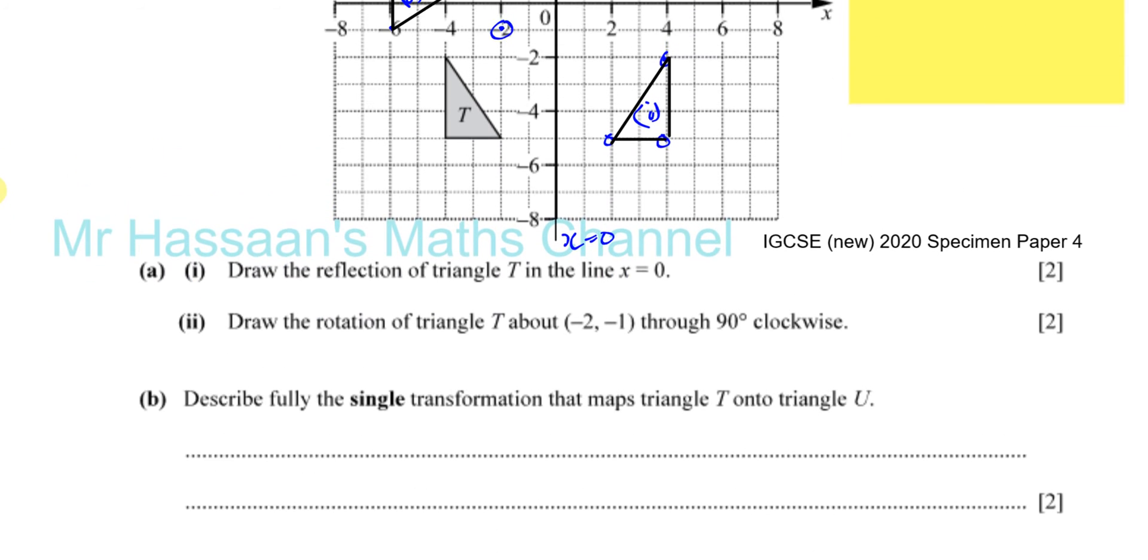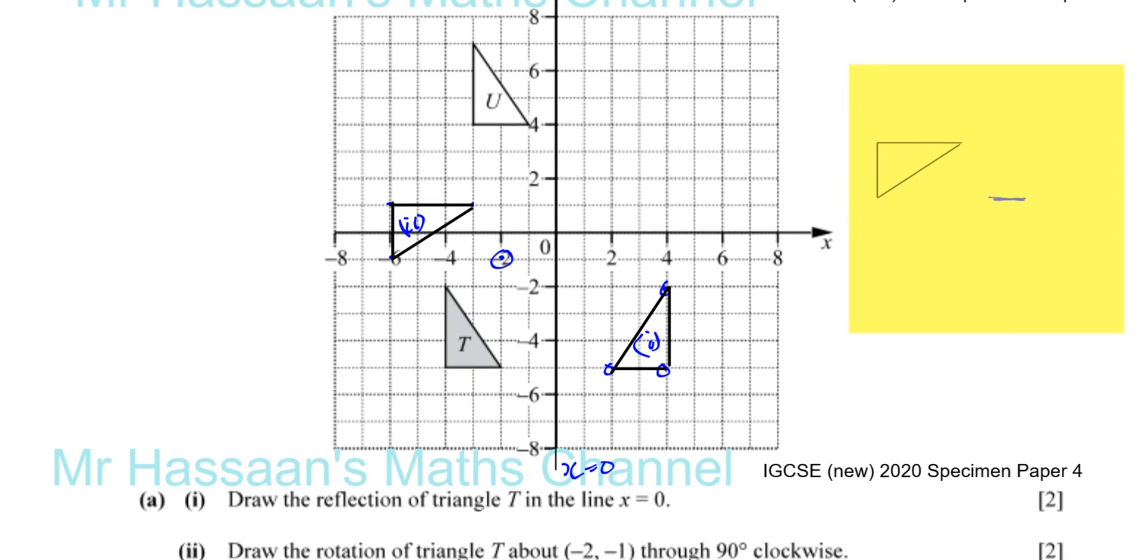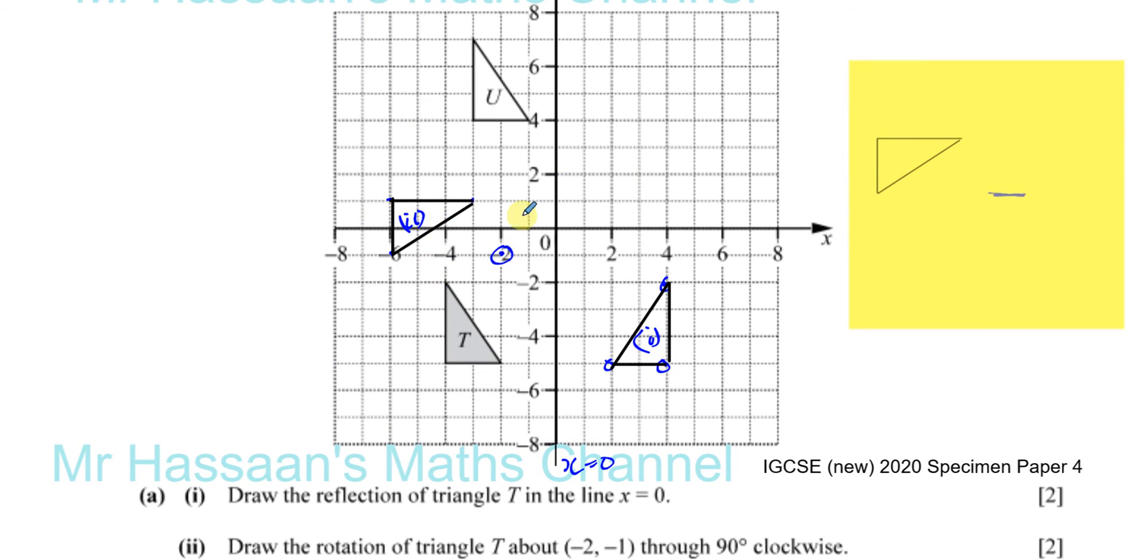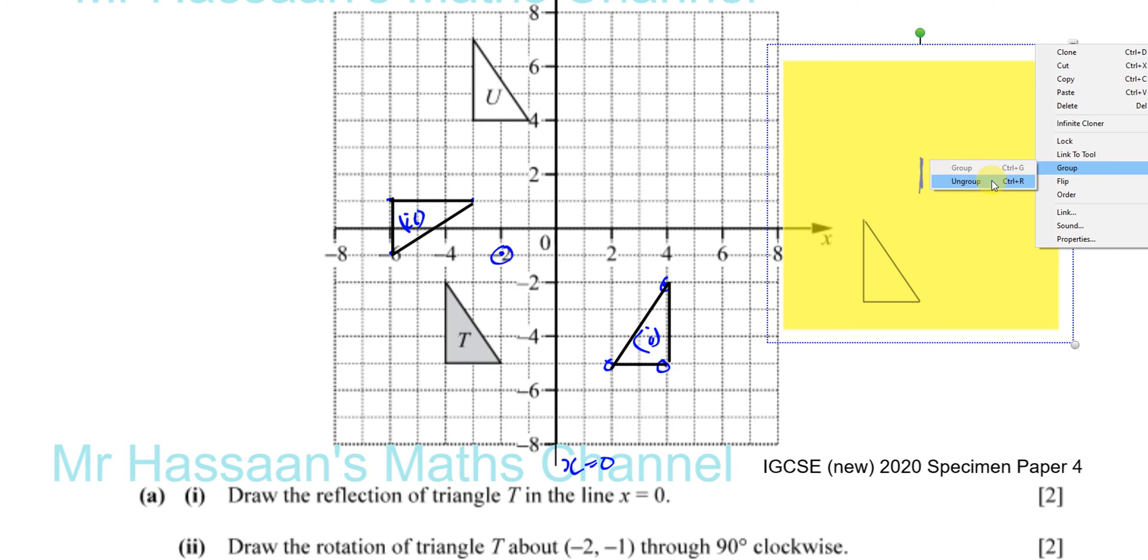Then it says, describe fully the single transformation that maps T onto U. Now, T onto U is quite simply a, I'm just going to do this so you can see. It's a translation. Okay. It's just moved up. It hasn't, it hasn't basically rotated. It hasn't reflected. It's just moved, staying at the same orientation without any change. So, like this is, this is the original T. It's the original triangle. It's just moved from there to there.